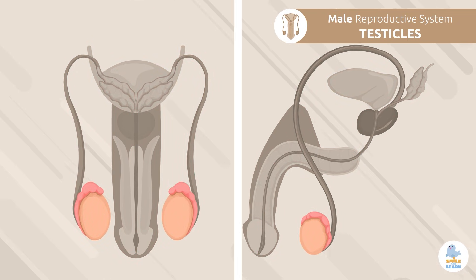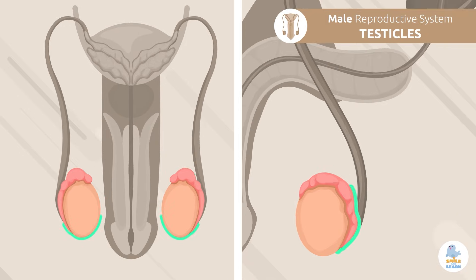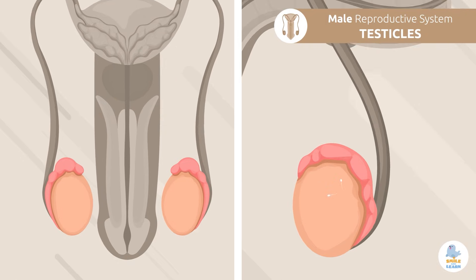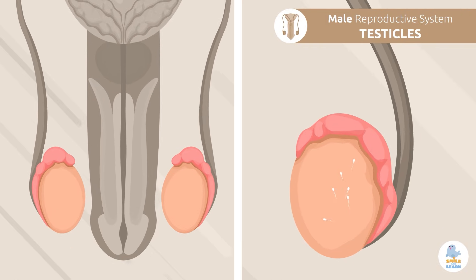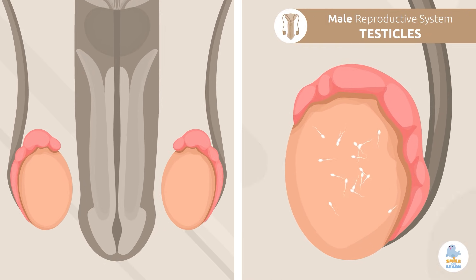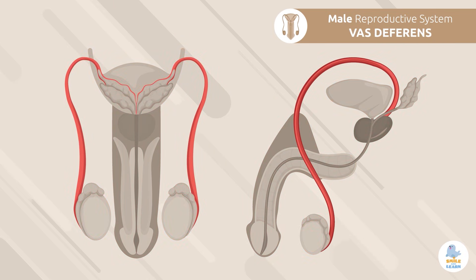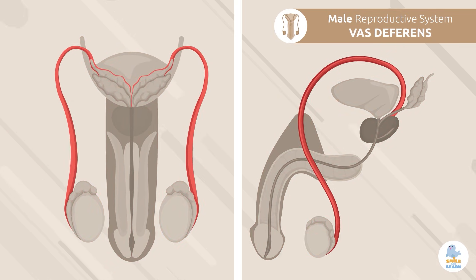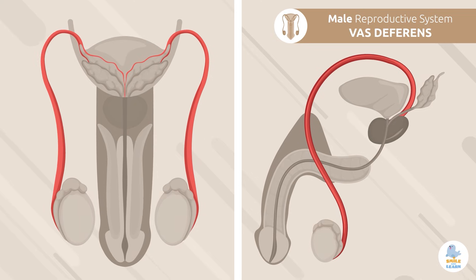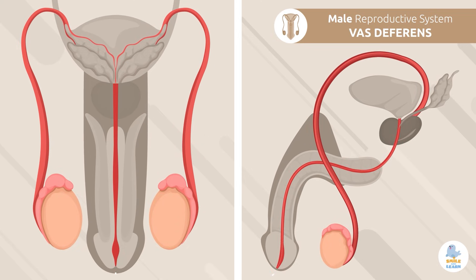Testicles: the testicles are oval-shaped and are responsible for making and storing millions of spermatozoa. Vas deferens: the vas deferens is responsible for connecting the testicles to the urethra.